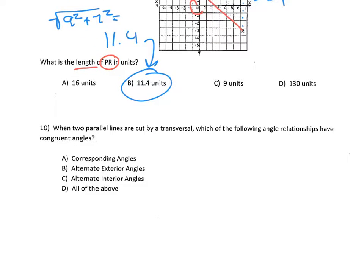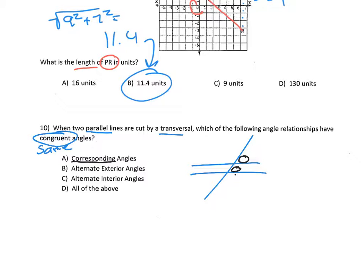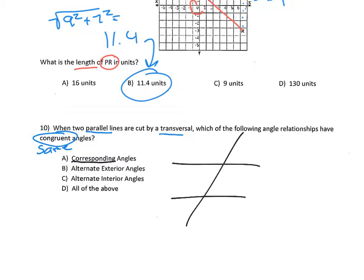Number ten: when two parallel lines are cut by a transversal, which of the following angle relationships have congruent or same angles? So we have two parallel lines cut by a transversal. Corresponding angles — remember, that's the same angle on the same side of the transversal. Let me make this a bit more clear: corresponding angles would be those two, or these two, or these two — same angle on the same side of the transversal.